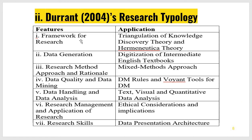Durrant's seven-pointed typology has seven elements: framework for research, data generation, research method approach and rationale, data quality and data mining, data handling and data analysis, research management and application of research, and research skills. In the framework, you will mention which theory you have used. Data generation covers how you generated data. Research method covers whether it is a mixed, qualitative, or quantitative approach. You will mention data mining rules or tools, and data handling covering text, visual, and quantitative data analysis, ethical consideration, and data presentation. On the left side are the features Durrant has mentioned; on the right side is the application I have applied in my research.